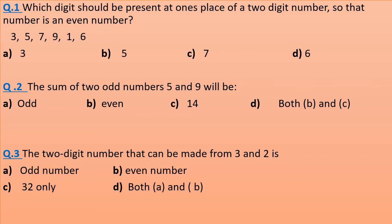The sum of two odd numbers, 5 and 9, will be: odd, even, 14, or both B and C? The sum of two odd numbers, 5 and 9. Now choose the correct option. You can see answers at the end of the video.